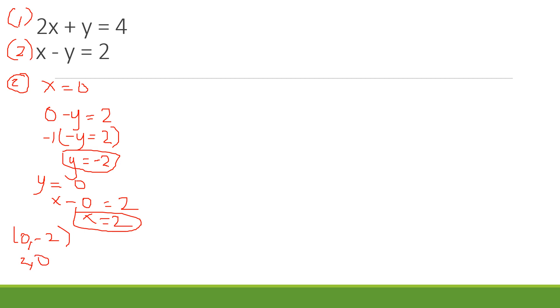For equation 2, we have two possible answers: (0, -2) and (2, 0). We will graph both of them. Next, let's try equation 1. For equation 1, we have 2x plus y equals 4. If x is zero, remember we are using x and y intercepts. Two times zero plus y equals 4, so y equals 4.